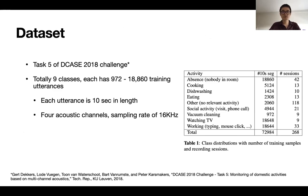So the dataset we'll be using in this paper is task five of DCASE 2018 challenge. So in total, we have nine classes, and each class has utterances ranging from 900 to 18,000 training samples. So the distribution is quite uneven if you look at the distribution on the right side of the table. And for acoustic channels for each utterance, it has four and a sampling rate of 16K.